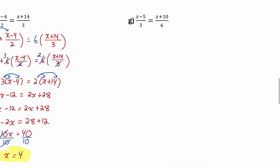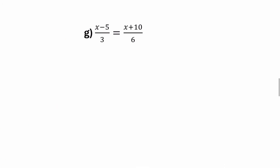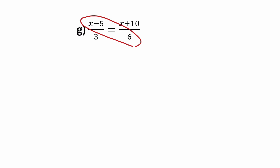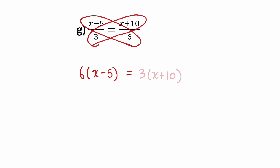Now our last example: part G. I have a fraction equal to a fraction, so I can use the shortcut of cross multiplication. On one side of the equation, I'll do the product of 6 and x minus 5. And on the other side, I'll do the product of 3 and x plus 10.